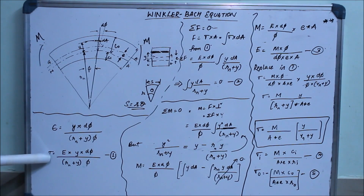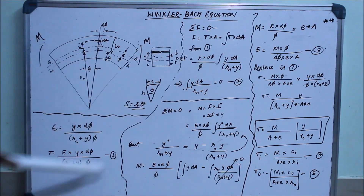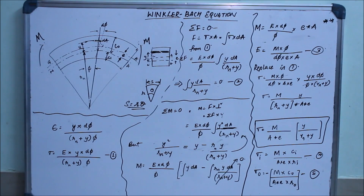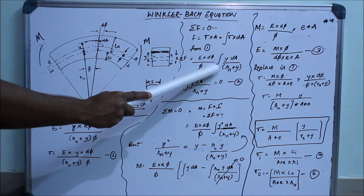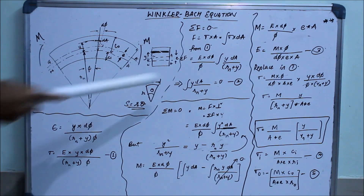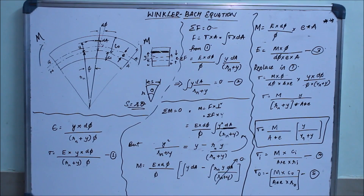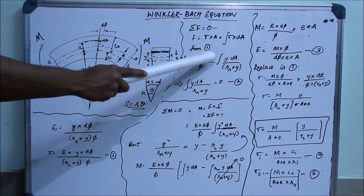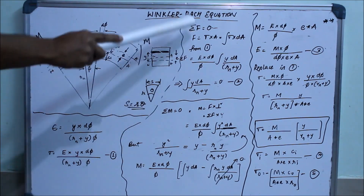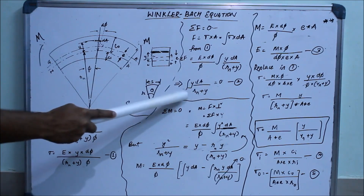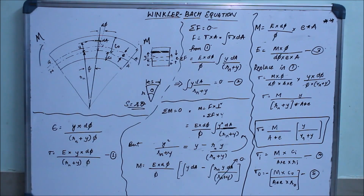From equation 1, we substitute the value of sigma. Remember that the integral is only over the area terms — the angle terms are constants and stay outside the integral. Since the sum of forces equals zero, we equate to zero, and we are left with the integral of y·dA divided by (rn + y) equals zero. This is the second important equation.